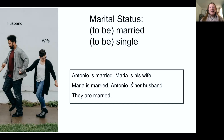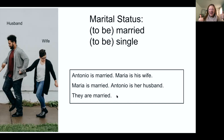Maria is his wife. Maria is a woman, so she is the wife. Antonio is the man, so he is the husband. Maria is married — Antonio is her husband. They are married. When someone is not married, they are single.